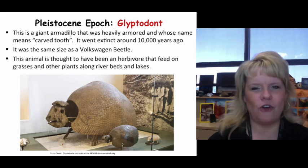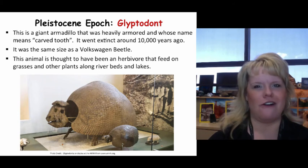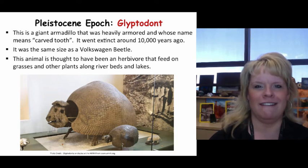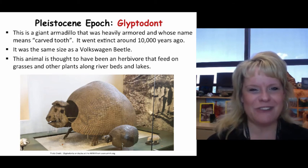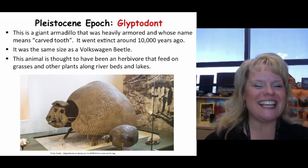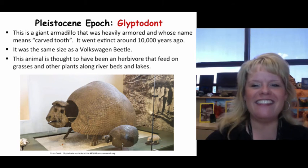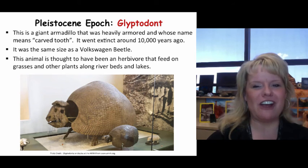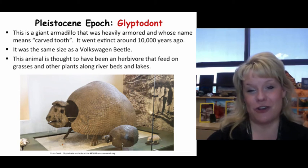Glyptodonts are giant armadillos — picture a Volkswagen Beetle car, make it a little flatter on top, and you've got yourself a Glyptodont. These went extinct at the end of the last Ice Age. They were super heavily armored and appear to have been herbivores, much like a modern-day armadillo, feeding on grasses and other plants along riverbeds and lakes. Basically, a giant armadillo.